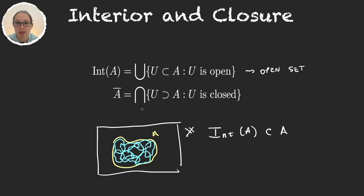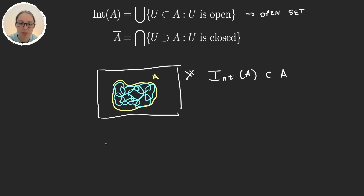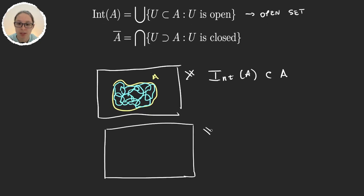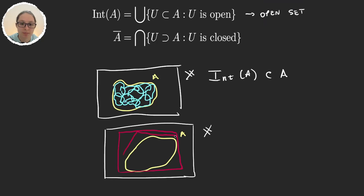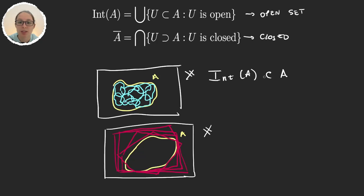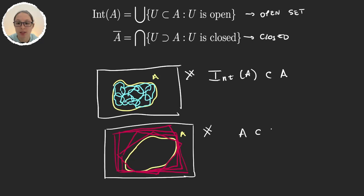The closure of a set is actually more important and more used than the interior, and is defined as the intersection of all the closed sets that contain A. If we have our set X and A, we can take all the closed sets that include A and just take their intersection. As a result, A is a subset of its closure.